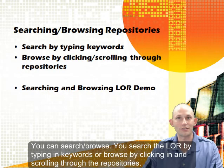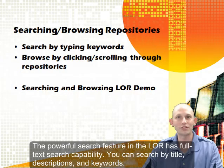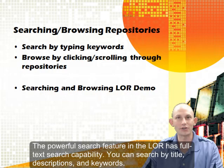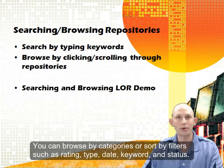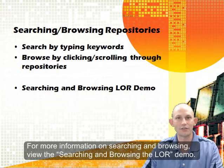You can search and browse the LOR by typing in keywords or browsing by clicking and scrolling through the repositories. The powerful search feature has full text search capability — you can search by title, descriptions, and keywords. You can also browse by categories or sort by filters such as rating, type, date, keyword, and status. For more information on searching and browsing, view the searching and browsing the LOR demo.